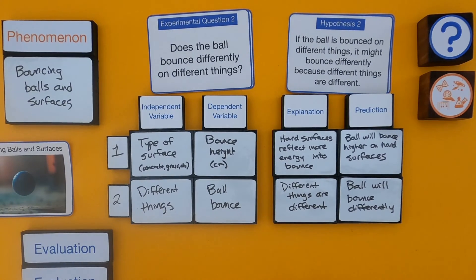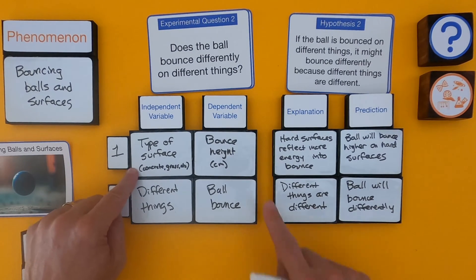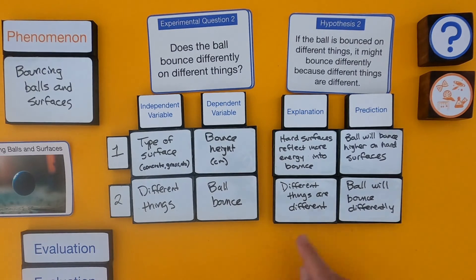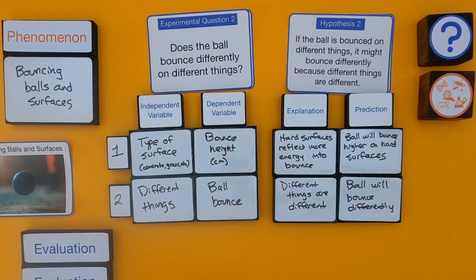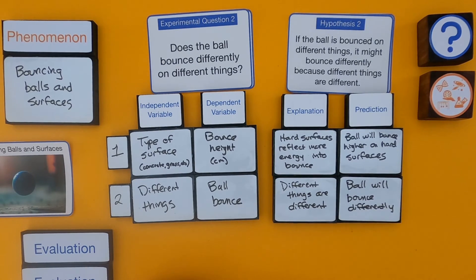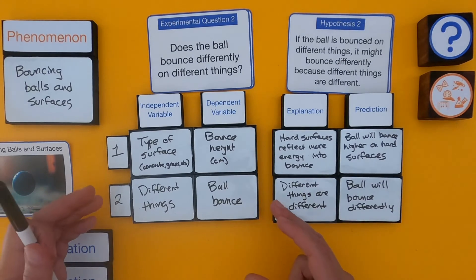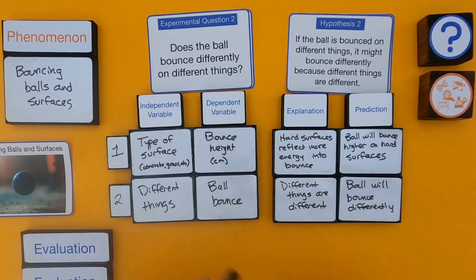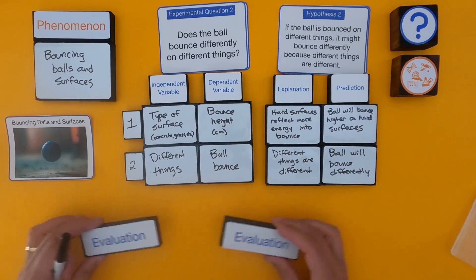As I look through it, I'm starting to see that student one's questions are better experimental questions. They are changing the type of surface to see how it affects bounce height. They're making a prediction that balls will bounce higher on a hard surface, and energy ends up being the explanation for why more energy would go back into the bounce on a hard surface. On the second question, they're just saying let's see how it bounces on different things — the independent would be 'different things,' the prediction is that balls will bounce differently, and the explanation is that different things are different.